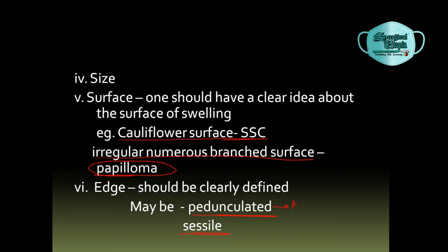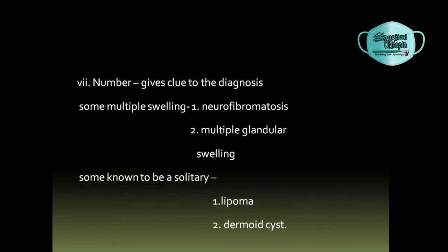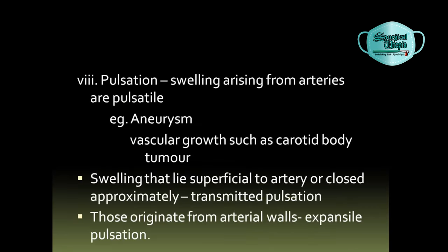In cases of pedunculated swelling, the swelling will be mobile. In cases where the swelling is sessile, it will be more attached to the surface of the skin and difficult to move. The number of swellings should also be noted — in cases of neurofibromatosis, multiple granular swellings are present, whereas in cases of lipoma or dermoid cyst, only a solitary swelling will be present.